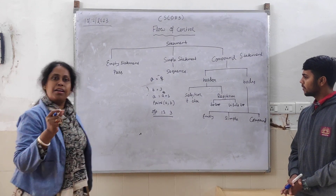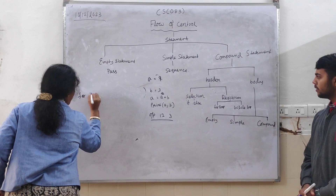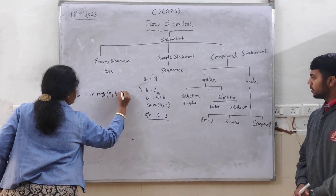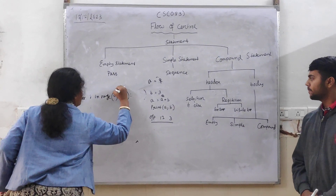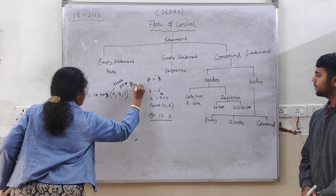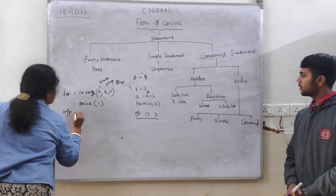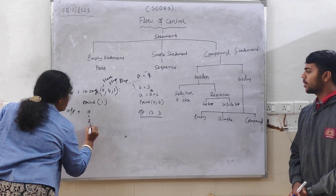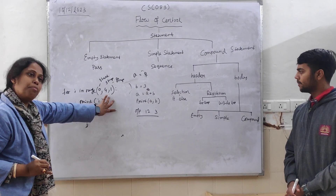Now I will tell you about repetition. Repetition has two types: for loop and while loop. For i in range(0, 4, 1) — what is this? Start, stop, step. Print i. What will be the output? Zero, one, two, three. It will stop before the stop value. This is the header part, and print i is the body part.